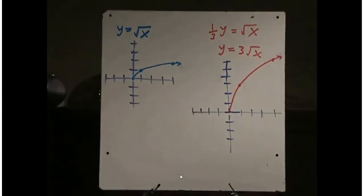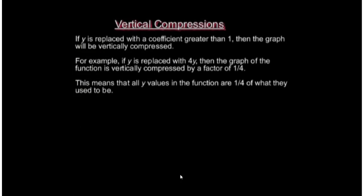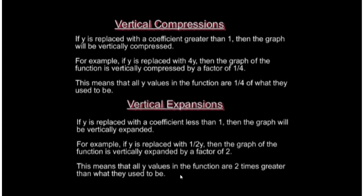Let's review vertical expansions and compressions. If y is replaced with a coefficient greater than 1, the graph will be vertically compressed. For example, if y is replaced with 4y, the graph is vertically compressed by a factor of one-fourth, meaning all y values are one-quarter of what they used to be. If y is replaced with a coefficient less than 1, the graph will be vertically expanded. For example, if y is replaced with one-half y, the graph is vertically expanded by a factor of 2, meaning all y values are 2 times greater than before.